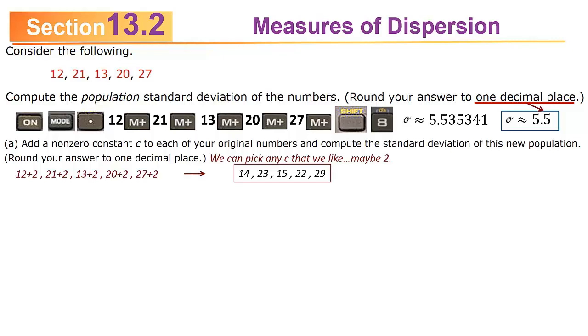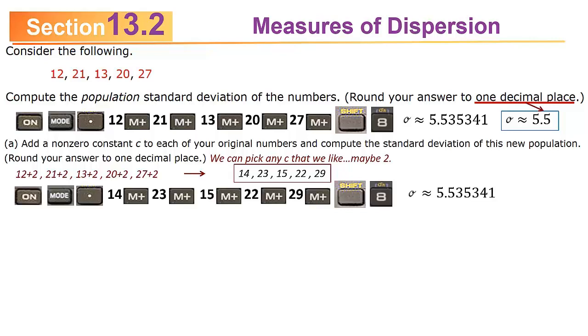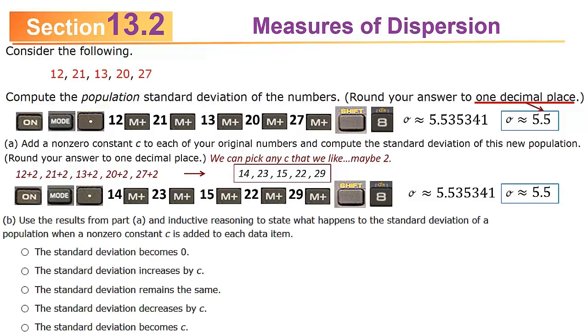Now calculate the population standard deviation again. If you do that, you'll find out it doesn't change. Rounded, you still get 5.5 approximately. Part B asks you to look at those two calculations and make an inference using inductive reasoning. It says state what happens to the standard deviation when a non-zero constant is added to each data item. An inference is not necessarily a proof, but it looks like it doesn't change. I did the calculation both ways, the answers came out the same. The inference would be the standard deviation remains the same. It turns out that is, in fact, true that when you add a single number to each data point, the calculation for the standard deviation does not change at all.